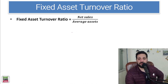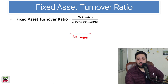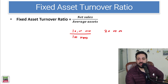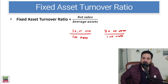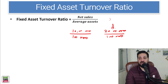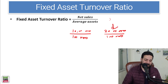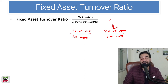For example, with average assets of 1 lakh, one business is doing 10 lakh rupees of sales. Another is doing 20 lakh rupees of sales with the same 1 lakh of average assets. Obviously, assuming they are in the same industry, the second one is more efficient. The higher the asset turnover ratio, the better.